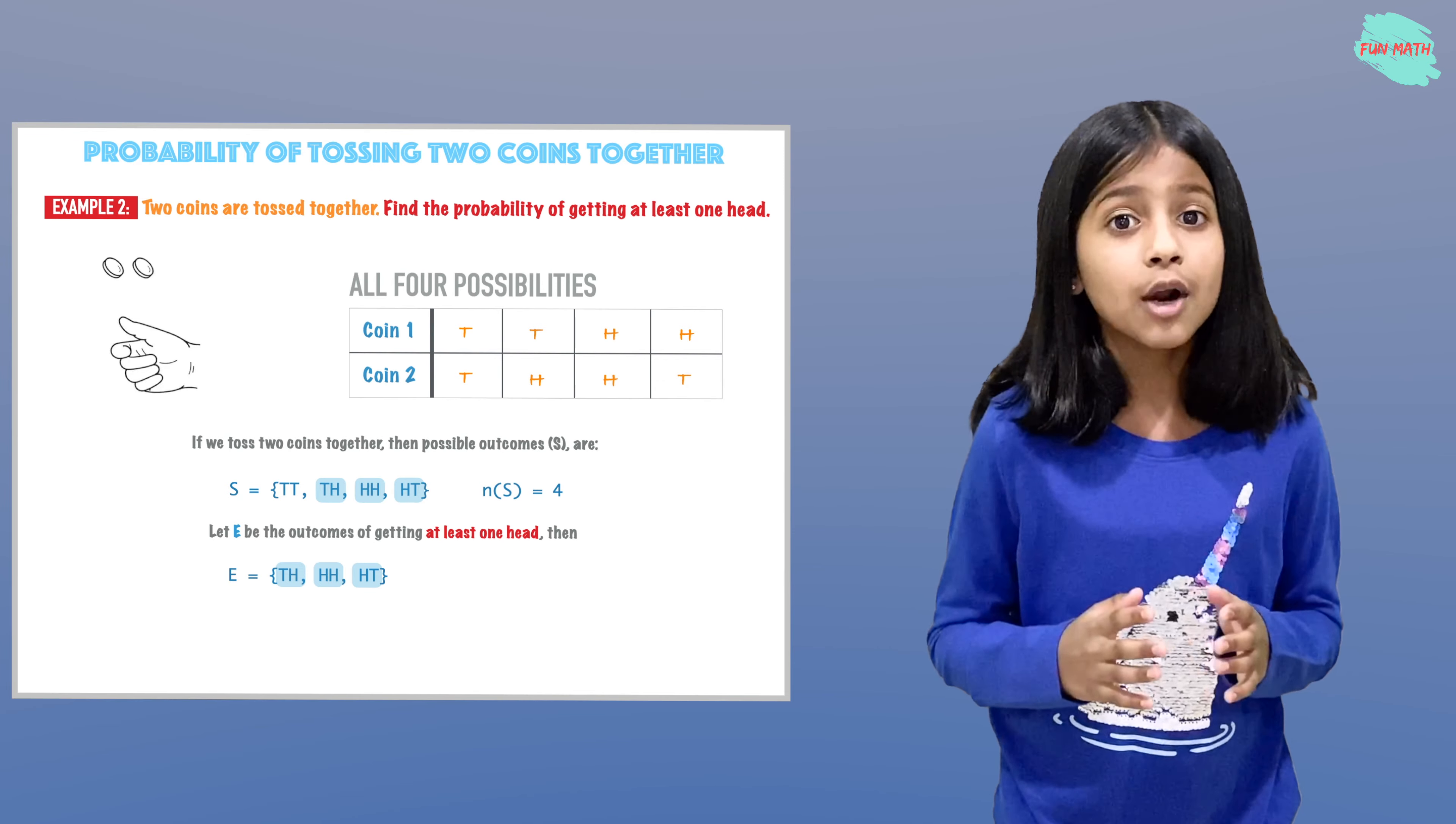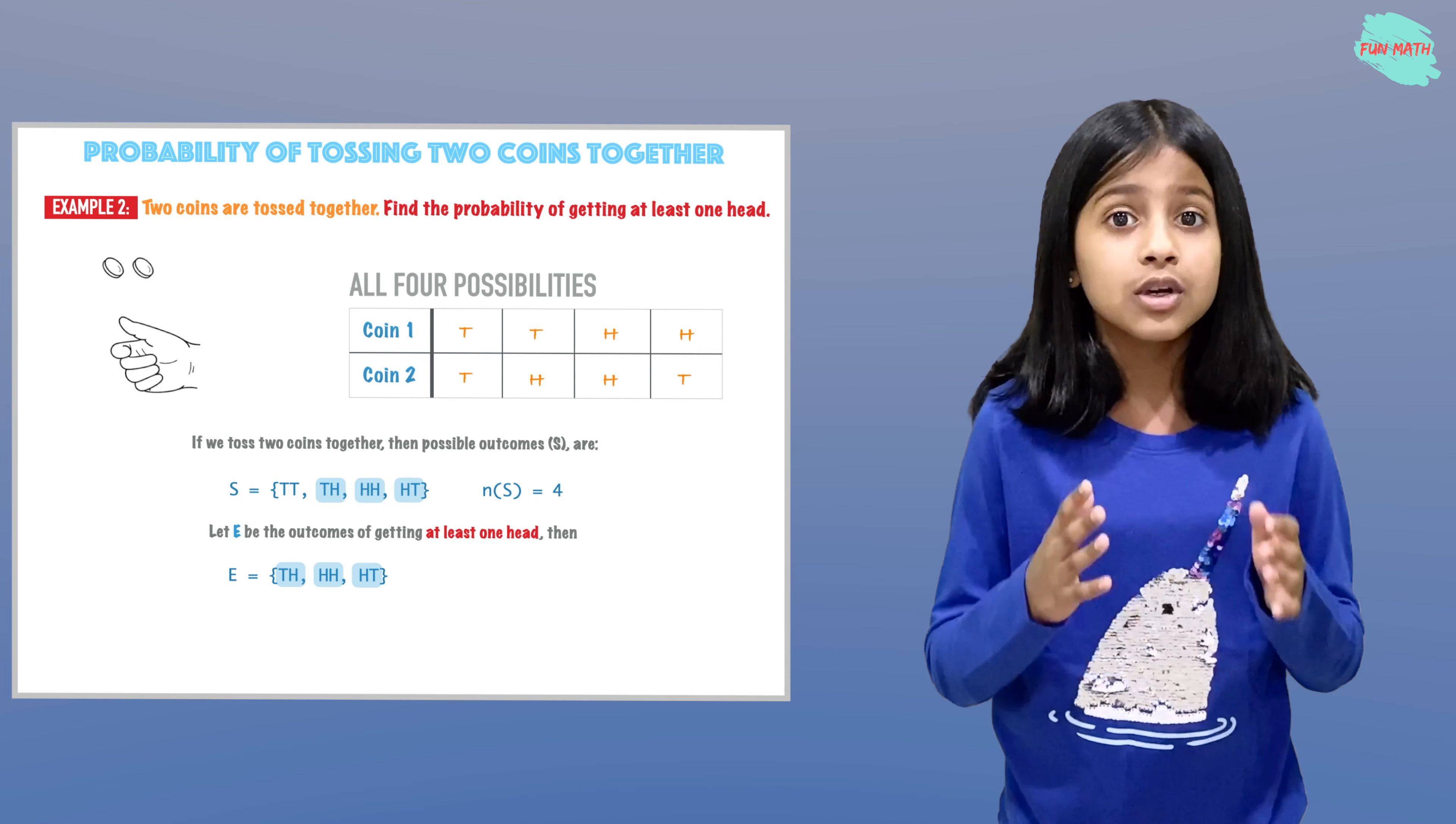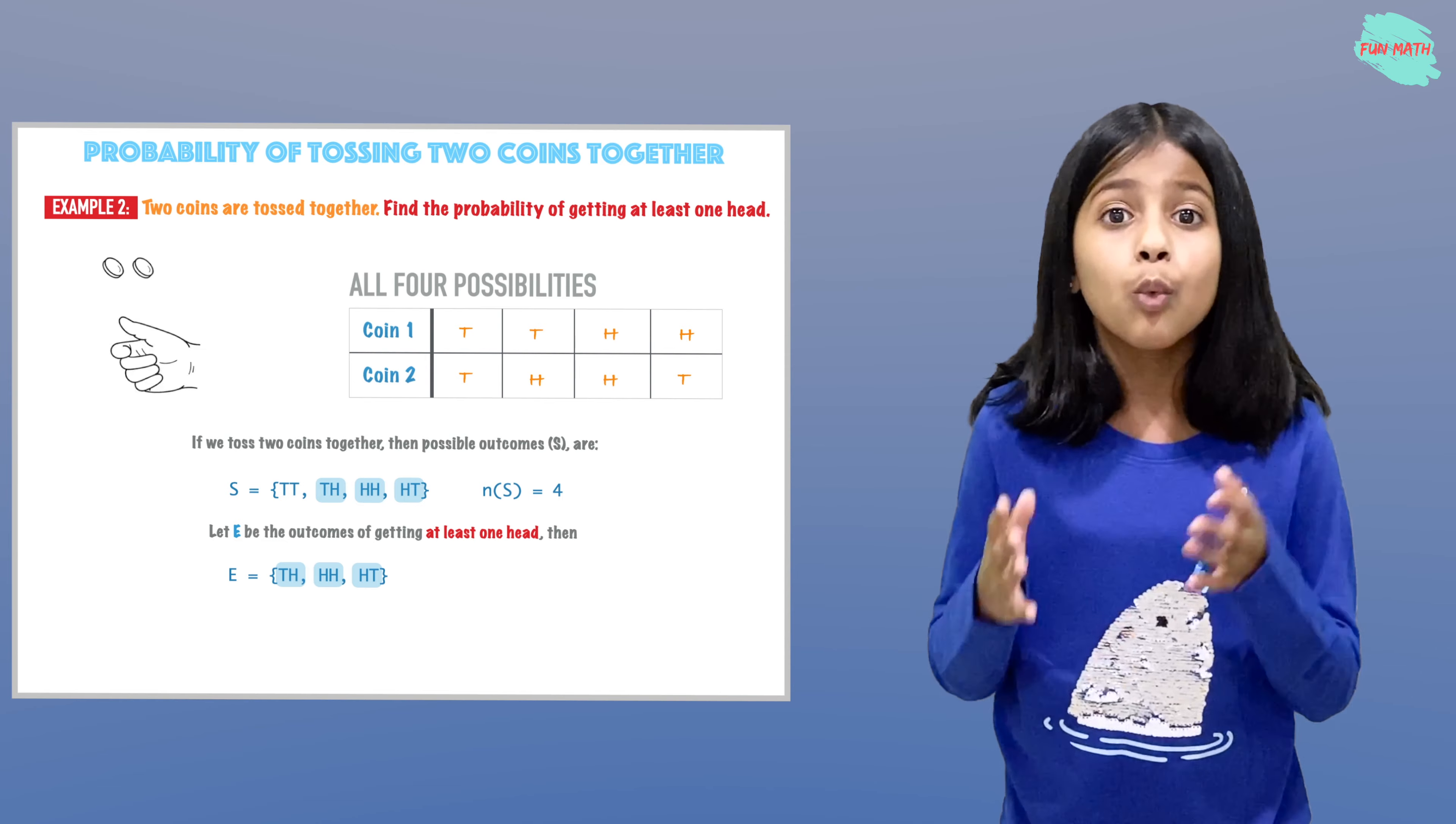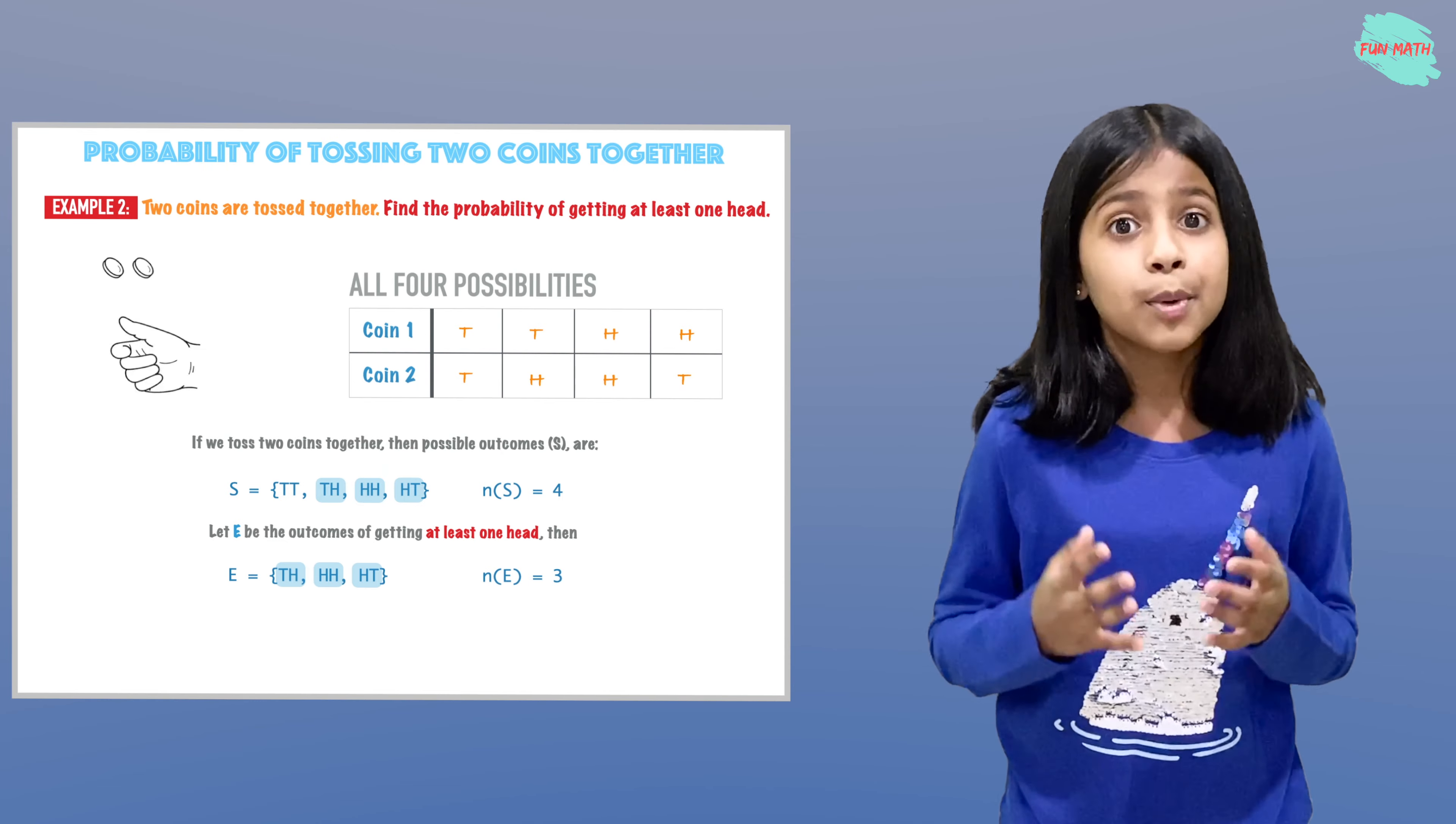But why are we using those three possibilities? We are using those three possibilities because we are trying to get at least one head. That's why we are using those three possibilities.